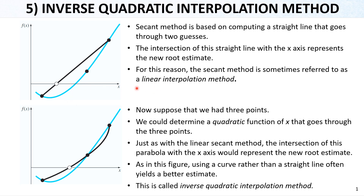This linear interpolation can be a bad prediction compared to the actual zero point. That's why, instead of linear interpolation, people recommend using quadratic interpolation. For that, we need three points — the first, the second, and a third guess. A quadratic interpolation function, shown in black, passes through these three points. When it crosses the x-axis it gives a prediction of the actual root, and it can provide a closer prediction. This is called the inverse quadratic interpolation method because we use a quadratic formula rather than a linear one.